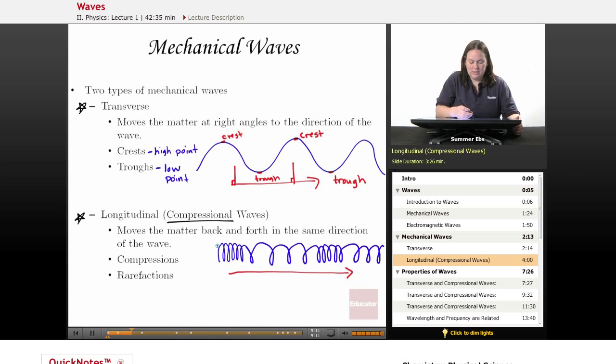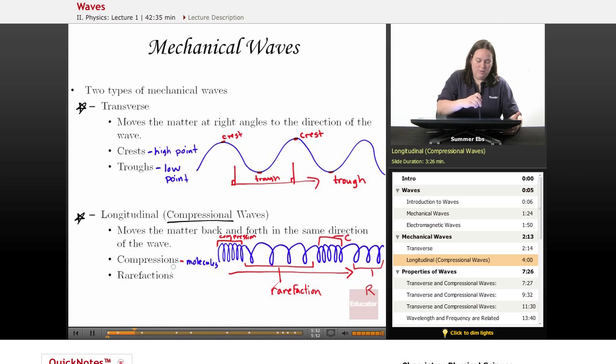Where it compresses is called a compression. Where it's spread out is a rarefaction. The compression is the part of the wave where molecules are squished together or compressed. The rarefactions are where the molecules spread apart.